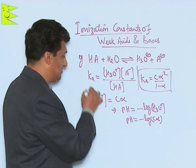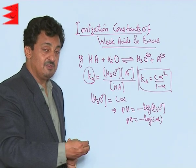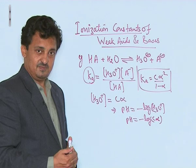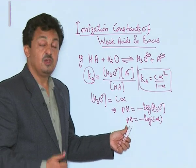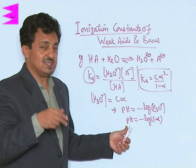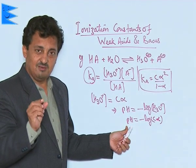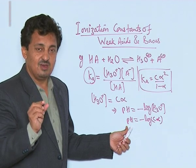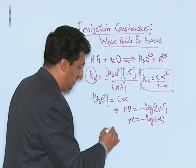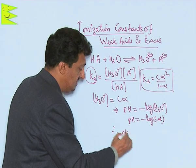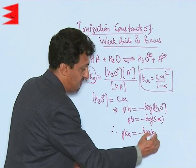We can also express the dissociation constant in terms of the power of Ka, just like we express the power of H ion concentration. This way, Ka becomes a very simple term which is easy to remember and understand. The formula is: pKa equals minus log of Ka.